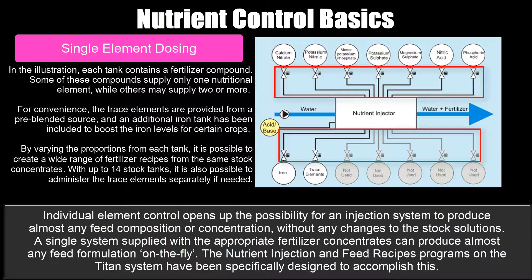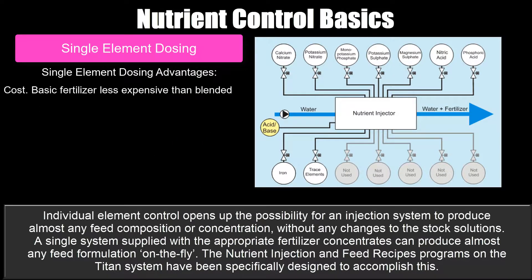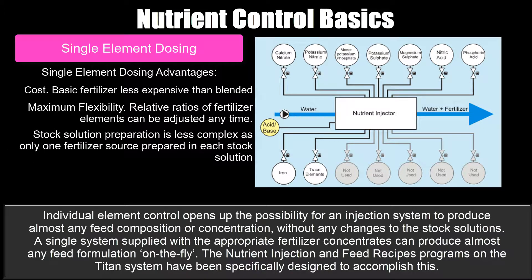With up to 14 stock tanks, it's also possible to administer trace elements separately if needed. Advantages include fertilizer cost, as basic fertilizer constituents are less expensive than blended materials, and maximum flexibility, since the relative ratios of fertilizer elements can be adjusted at any time. Stock solution preparation is less complex, as only one fertilizer source is prepared in each stock solution.